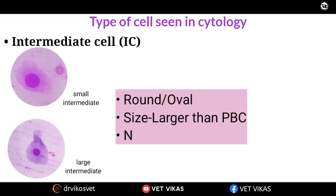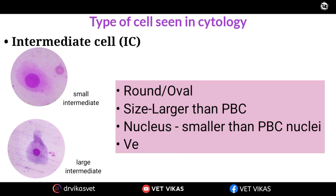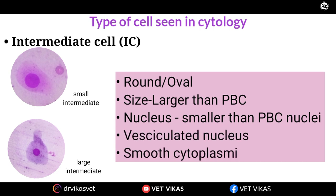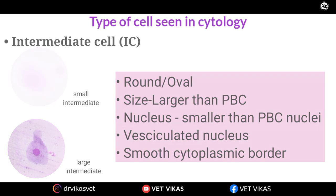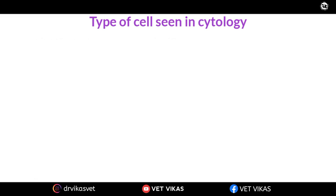The next one is intermediate cell. The size of the cell will be larger as compared to parabasal but the nucleus size will be smaller as compared to parabasal. The cytoplasmic border will be very smooth and the shape of the cell will be round or oval as like parabasal cell, and the nucleus is still vesiculated in case of intermediate cell also.